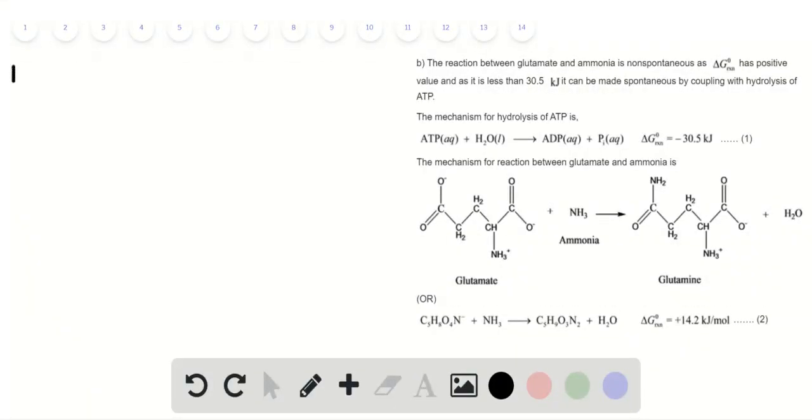Let's start with option A to calculate the equilibrium constant K for the reaction between glutamate and ammonia. At equilibrium, the standard Gibbs free energy of the reaction must be determined.